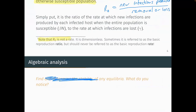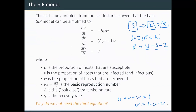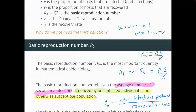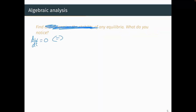Starting with the dv/dt equation: when is this equal to zero? Either v = 0, or the bracket (R₀u − 1) = 0, which means u = 1/R₀. So dv/dt = 0 only if v = 0 or u = 1/R₀.